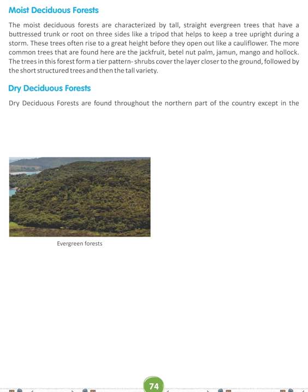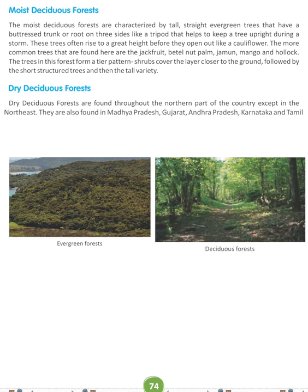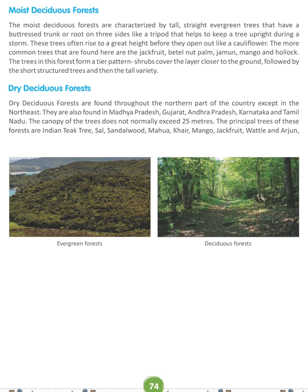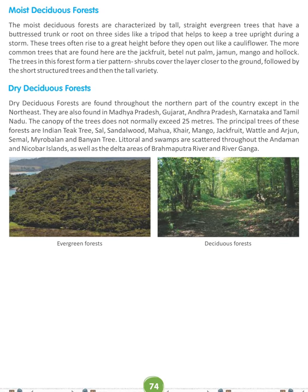Dry Deciduous Forests are found throughout the northern part of the country except in the northeast. They are also found in Madhya Pradesh, Gujarat, Andhra Pradesh, Karnataka, and Tamil Nadu. The canopy of the trees does not normally exceed 25 meters. The principal trees of this forest are Indian Teak, Sal, Sandalwood, Mahua, Khair, Mango, Jackfruit, Bahel, Arjun, Semal, Myrobalan, and Banyan trees. Littoral and swamp forests are scattered throughout the Andaman and Nicobar Islands as well as the delta areas of the Brahmaputra River and River Ganga.